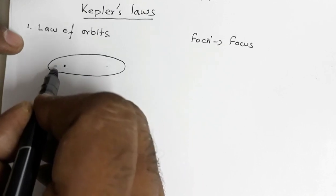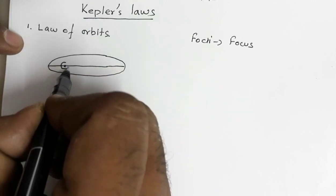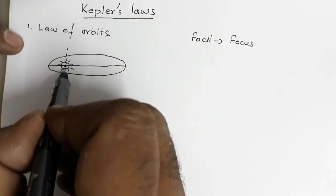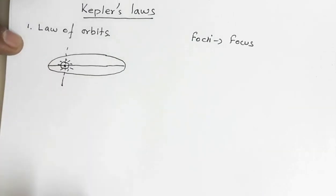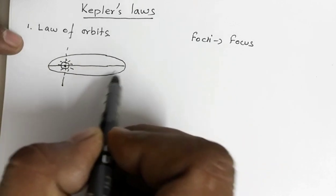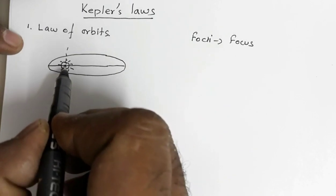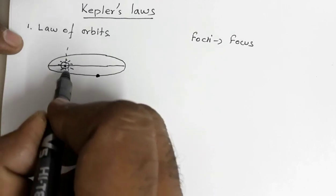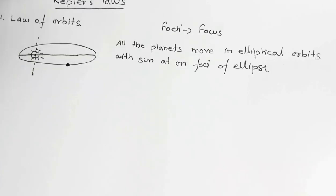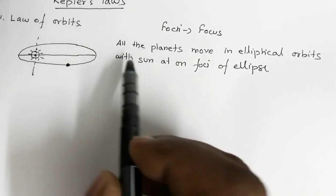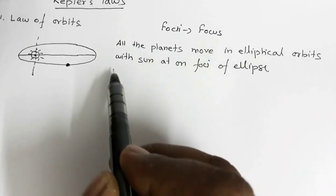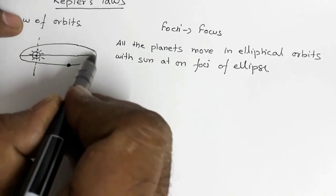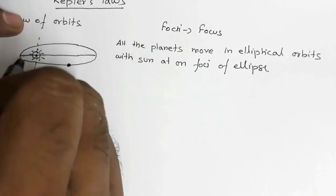Let us assume that the sun is at this particular location. The law of orbits says that all planets move around the sun in elliptical orbits with the sun at one of the foci. So if this is Earth, it will rotate in this elliptical orbit with the sun at one of the foci. The statement for law of orbits is: all the planets move in elliptical orbits with the sun at one focus of the ellipse.